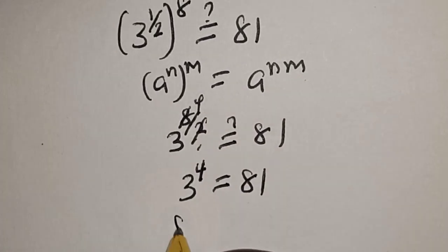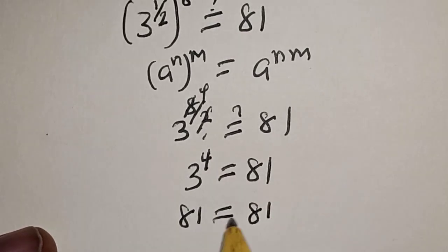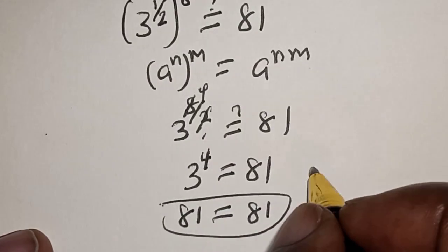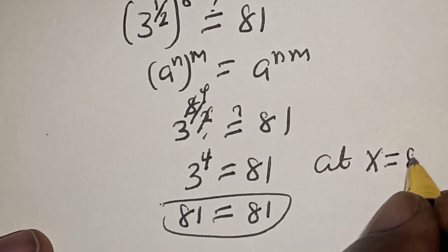Meaning that the left hand side 81 is equal to the right hand side 81, which satisfies the given equation at x is equal to 8.